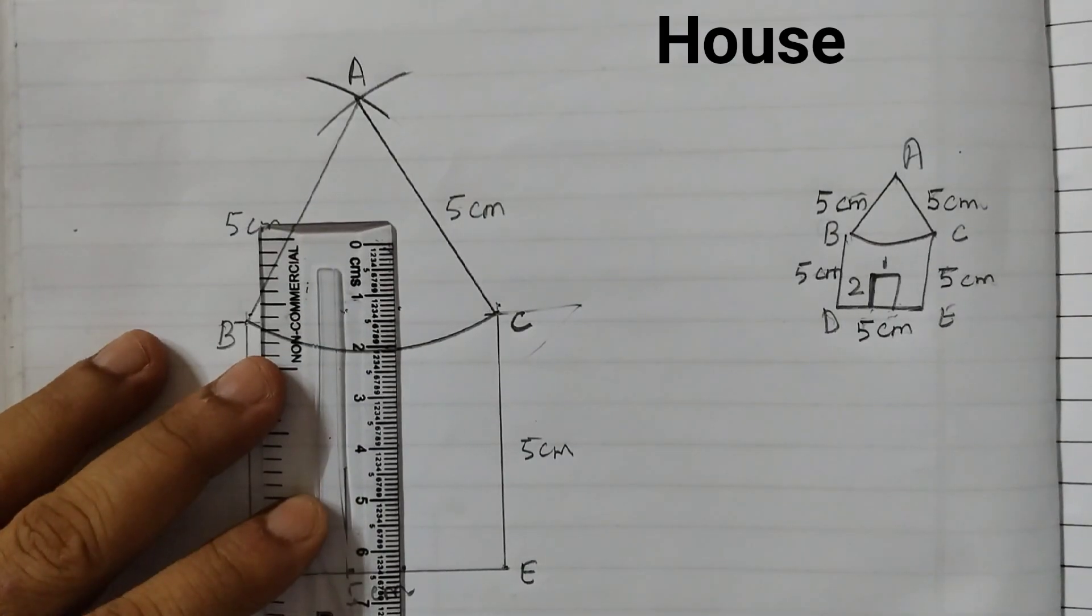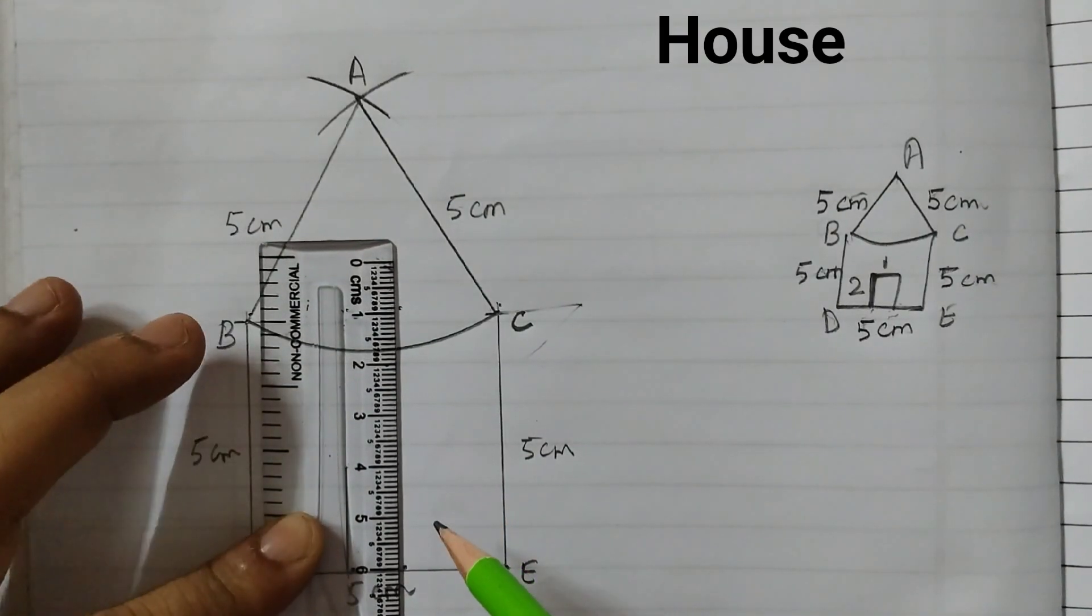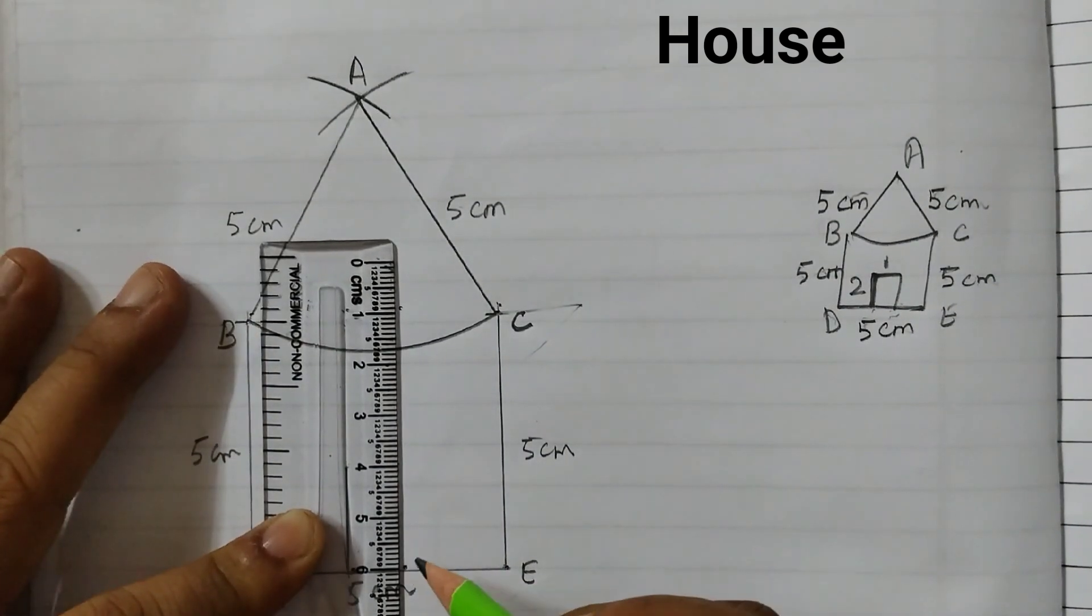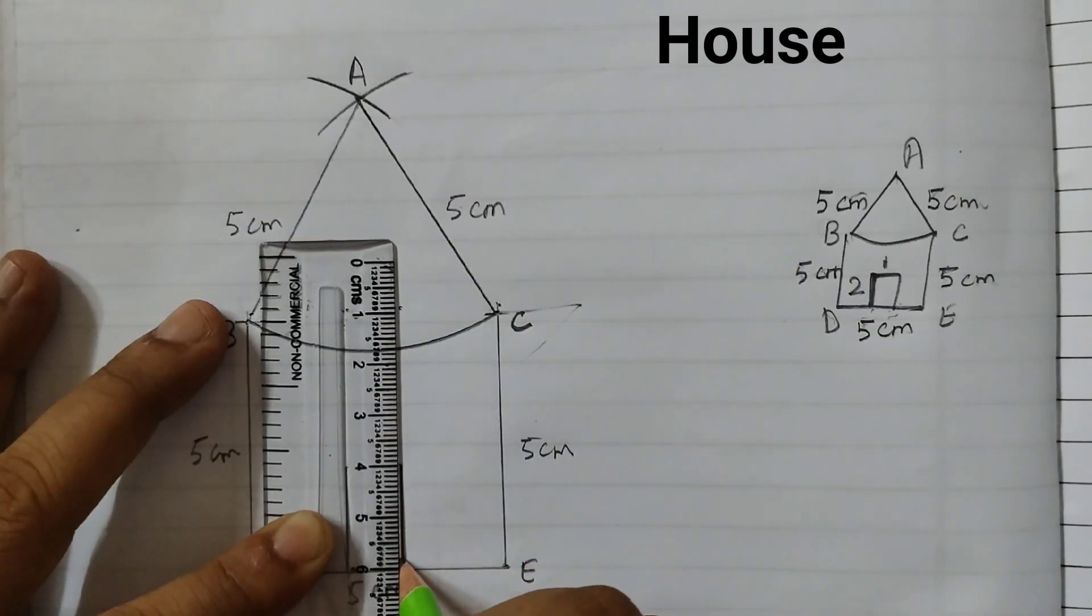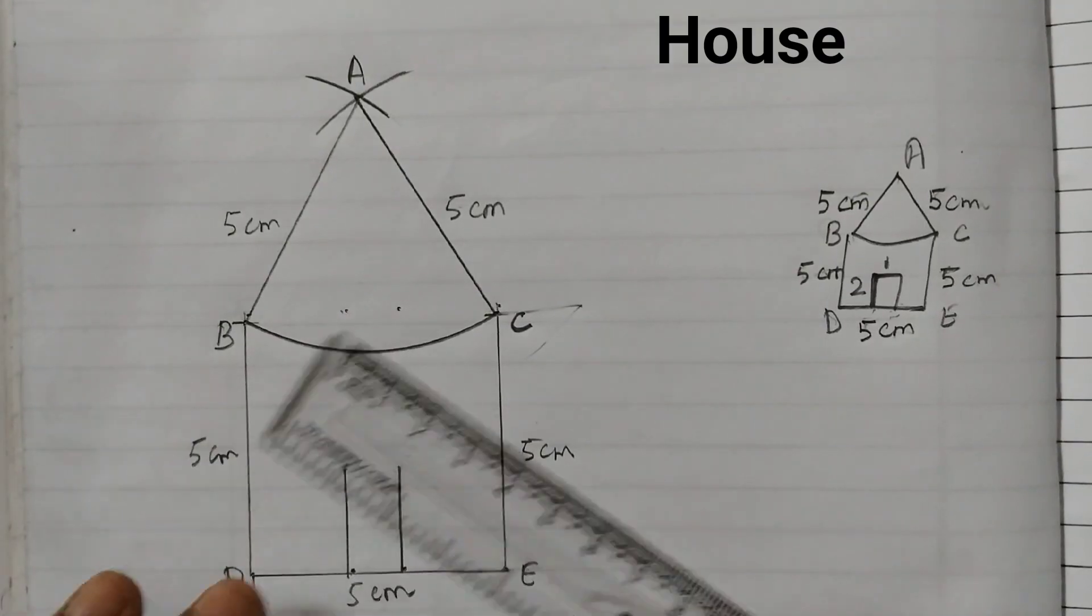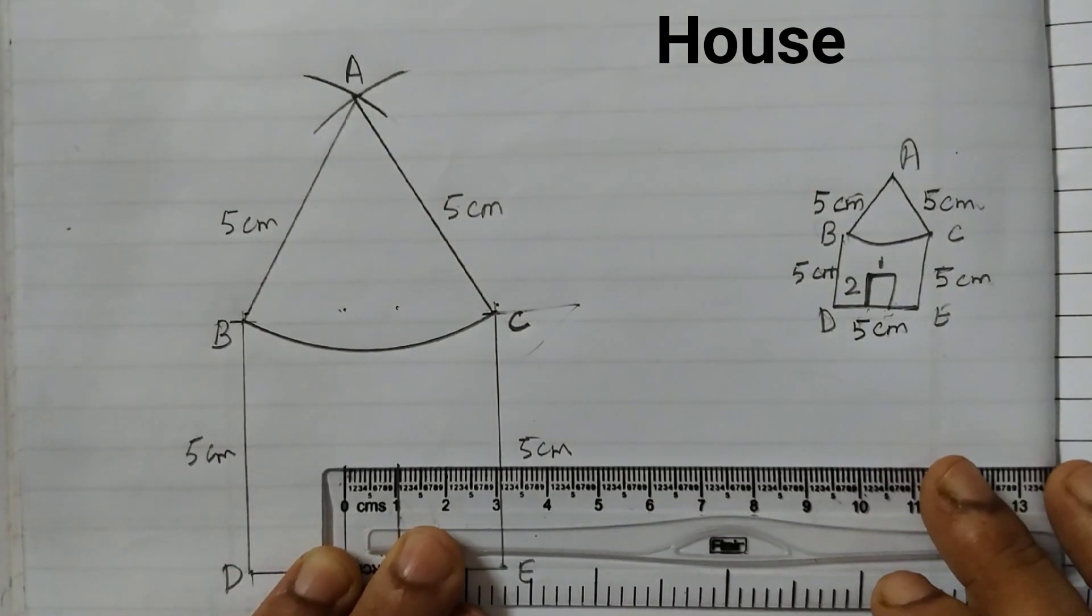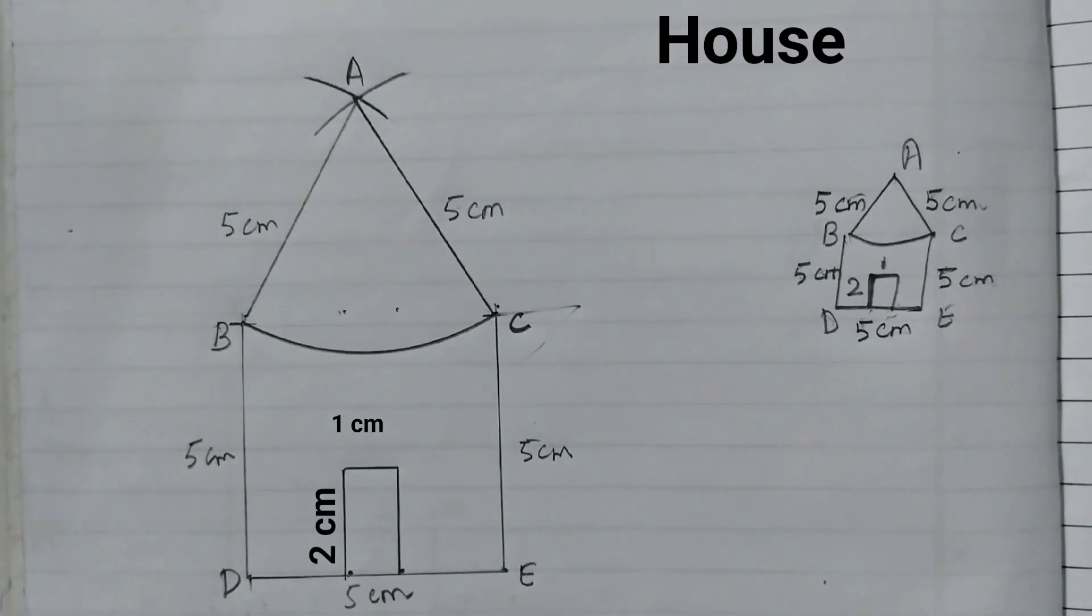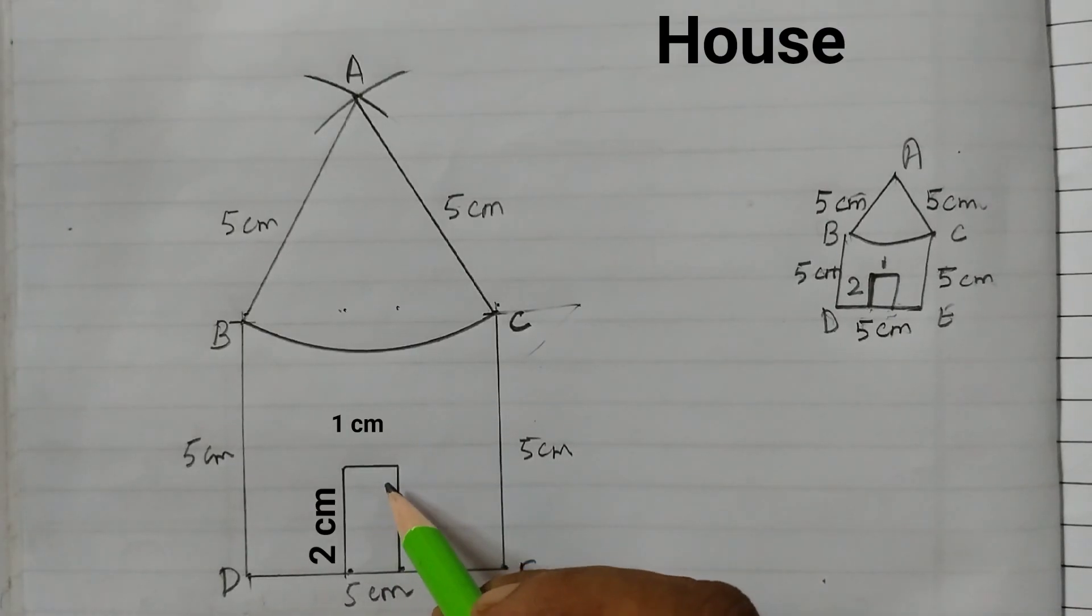Similarly here. Keep it at 6. I am just taking 2 cm. 4 to 6. And now this will be 1 cm. 0 to 1. So this length is 2 cm and this is 1 cm. Now the house is ready.